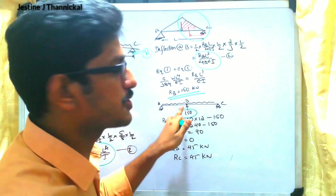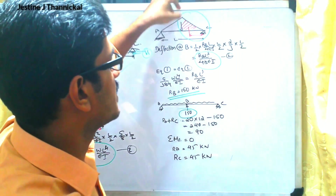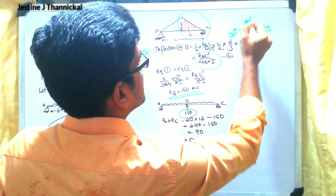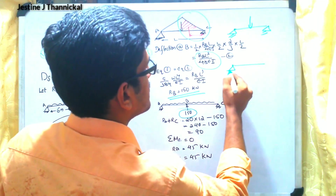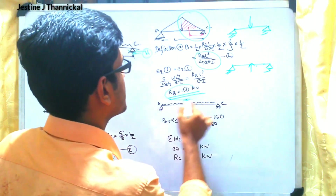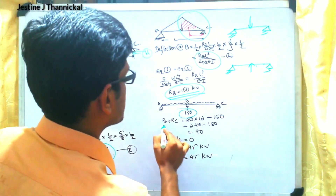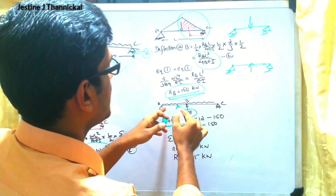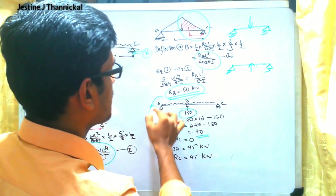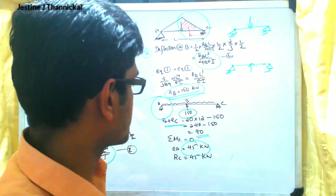Rb is actually applied in the upward direction on the beam. Since Rb = 150 kN, we get a positive value. Then, from equilibrium, Ra + Rc = 20 × total span − 150, giving 90 kN. Taking moment equilibrium (ΣMA = 0), we get Ra = Rc = 45 kN.